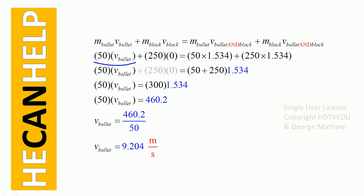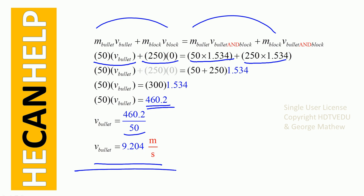Substituting: 50 times speed of bullet before collision, plus 250 times zero, equals 50 times 1.534, plus 250 times 1.534. This gives 50 times speed of bullet equals 460.2. Dividing both sides by 50, the speed of the bullet before collision is 9.204 meters per second. Note: 50 grams was not converted to kilograms because the mass appears on both sides and cancels. The velocity of the bullet before collision is 9.204 meters per second.